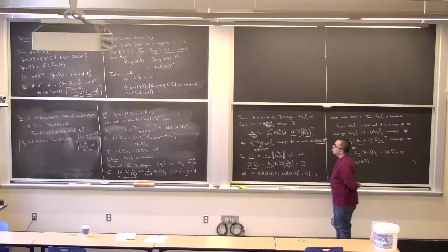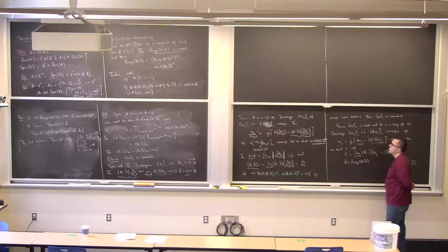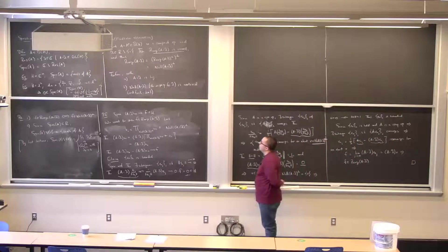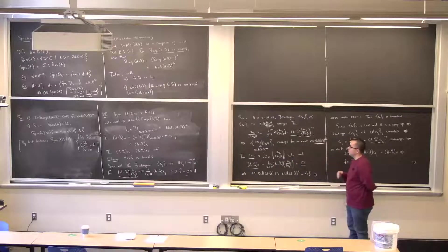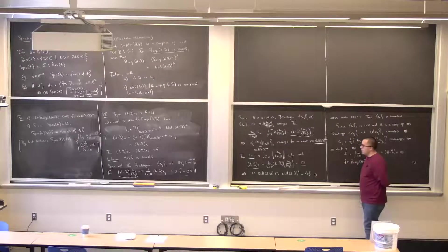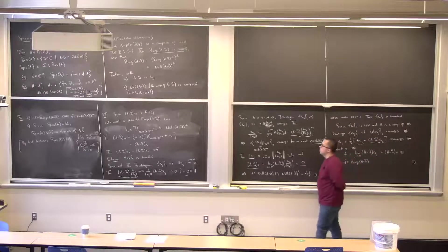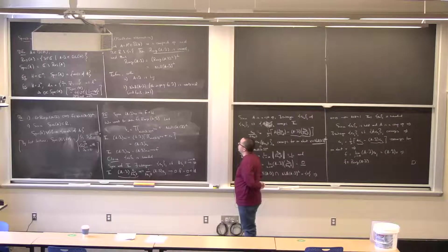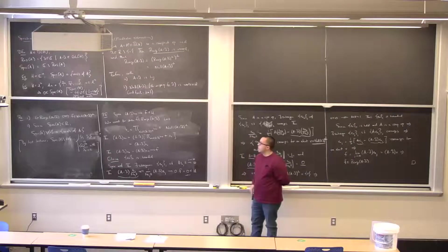The Fredholm alternative tells us that the range of A minus λ, for a compact self-adjoint operator, is closed. Notably, the self-adjointness was not used in proving the range is closed—this holds for any compact operator with λ non-zero and complex. The self-adjointness is used in the rest: that the range equals the orthogonal complement of the null space of A minus λ, giving the two alternatives.